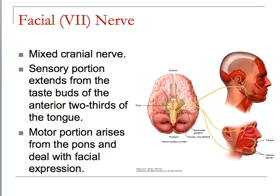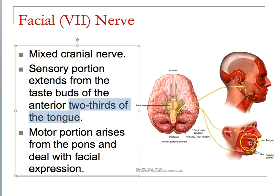The facial nerve is number seven. This is the sensory portion for the taste buds of the anterior two-thirds of your tongue. It also deals with facial expression, originating from the pons. Your emotional responses to things show up here — if I say 'test on Wednesday,' you're going to make a scrunchy face and you can't control it. Your body has the ability to let the world know what you're thinking, even when you may not want it to.